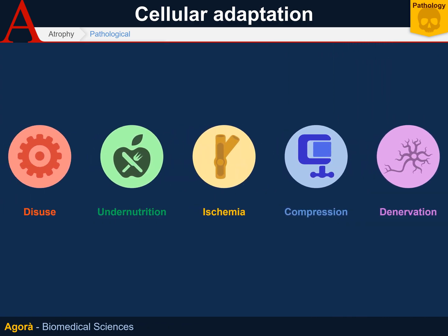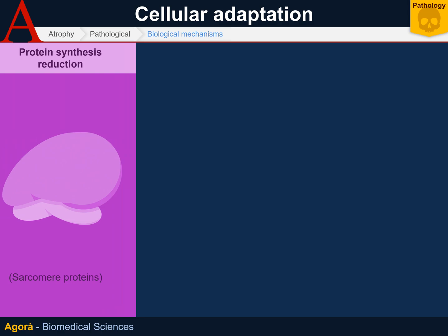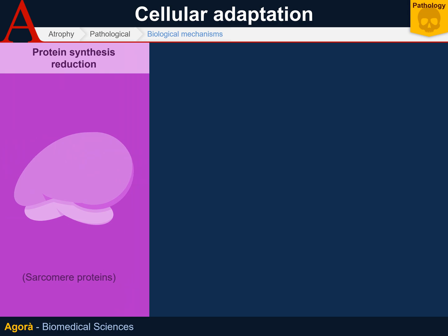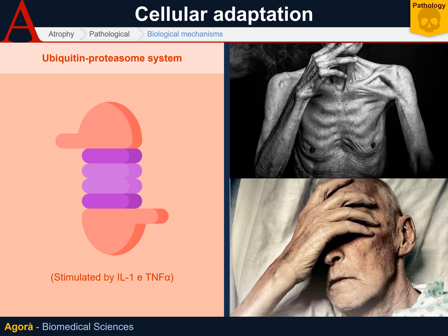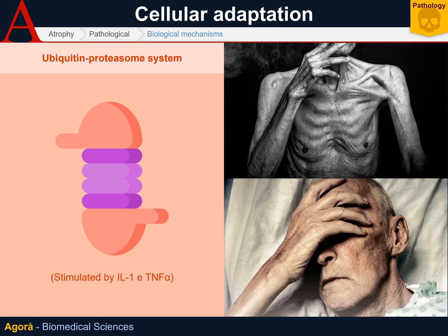Hormones are, of course, capable of causing atrophy in physiological forms, as we said. From a biological point of view, atrophy is linked to a number of mechanisms: protein synthesis reduction on the one hand, and ubiquitin-proteasome system hyperactivity on the other. Protein synthesis reduction may be observed in a mobilized muscle with lacking protein synthesis in the sarcomere, while the ubiquitin-proteasome system is especially stimulated by IL-1-beta and TNF-alpha cytokines. The proteasome plays a key role in the disposal of cellular waste products, but in this case it works by destroying the physiological proteins of the cell.